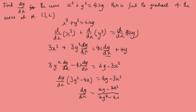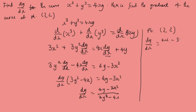We want to find the gradient at the point (2, 2). Substituting into our expression: dy by dx equals 4 times 2 minus 3 times 4, over 3 times 4 minus 4 times 2, which gives 8 minus 12 over 12 minus 8, equals minus 4 over 4, which equals minus 1 as our gradient.